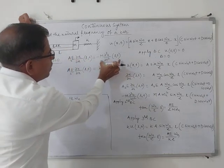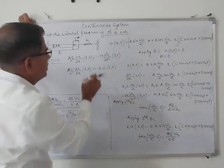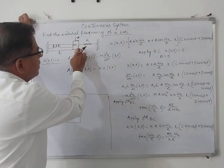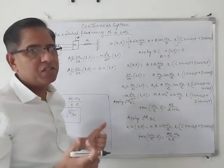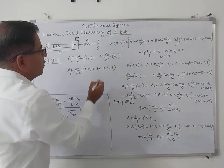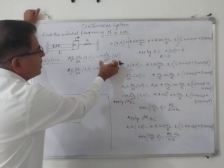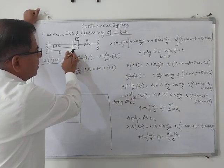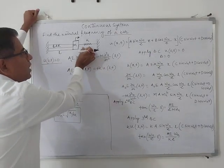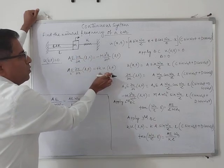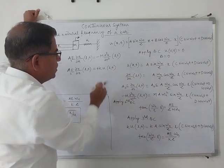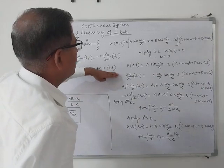The tensile force in the bar is equal to the inertia force due to this mass. The inertia force is mass into acceleration. Since the spring force and inertia force are in opposite directions, one is kept negative and one is kept positive. Similarly, the tensile force is also equal to the spring force, that is stiffness into displacement.